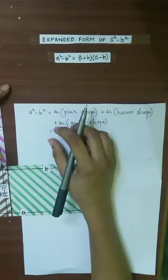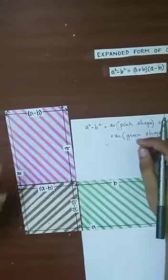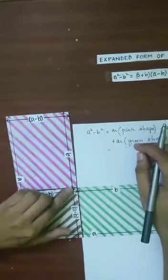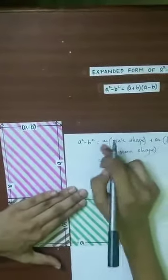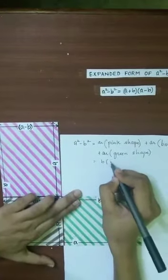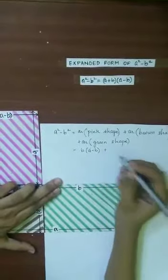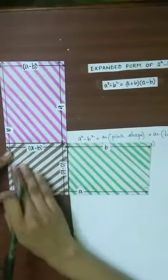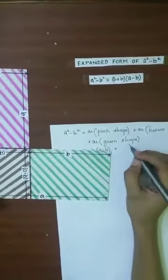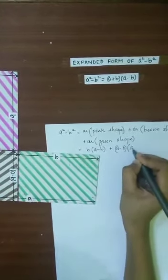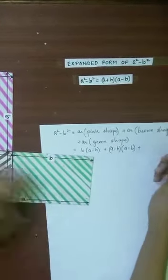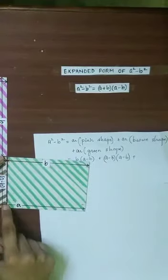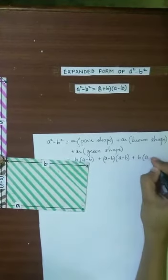The pink shape plus brown shape plus green shape is going to give us a²-b². Now the area of the pink shape: it has its breadth equal to (a-b) and length equal to b. So the area of the pink shape will be b(a-b). Plus the area of the brown shape: it has its length as (a-b) and breadth as (a-b) — length and breadth are the same, so this is a square. The area of the brown square is (a-b)(a-b). The area of the green shape is also b(a-b).